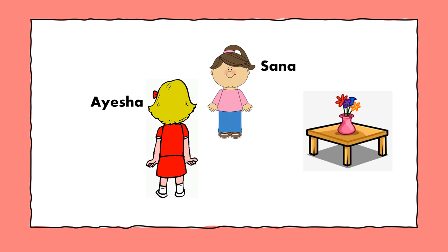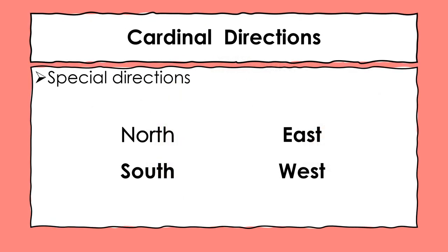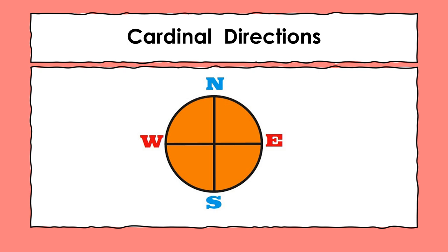To help in such conditions, we have cardinal directions. These are special directions that remain the same no matter what your placement is. There are four cardinal directions: North, South, East, and West. In this picture we can see the four cardinal directions written in short form with capital letters — N for North, S for South, E for East, and W for West.